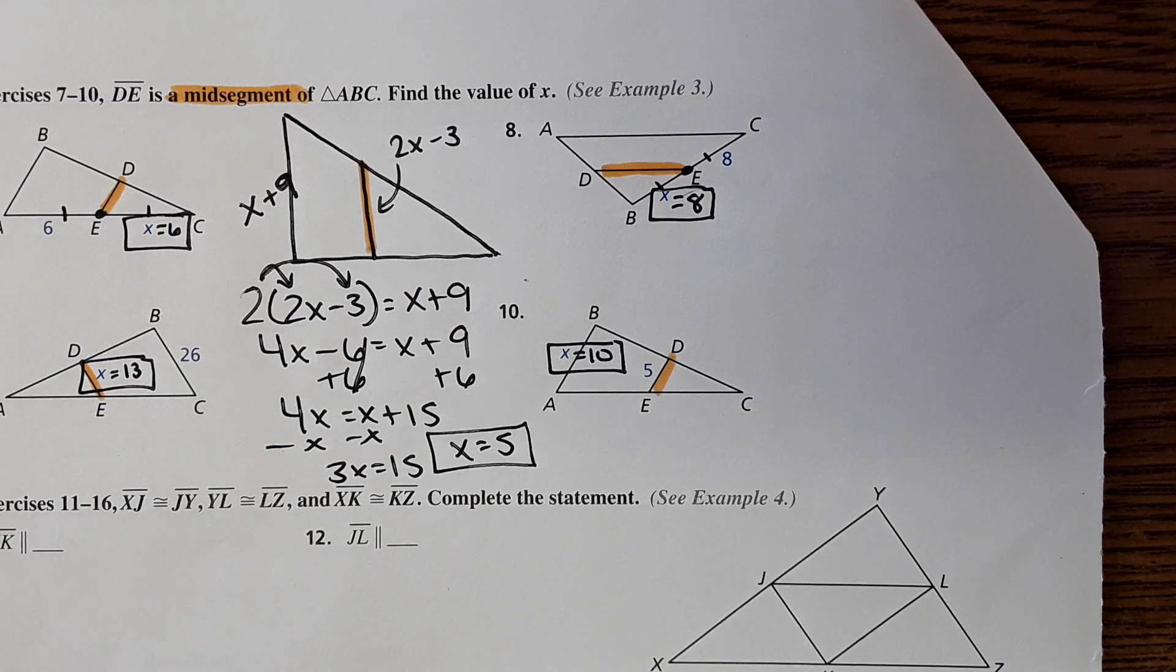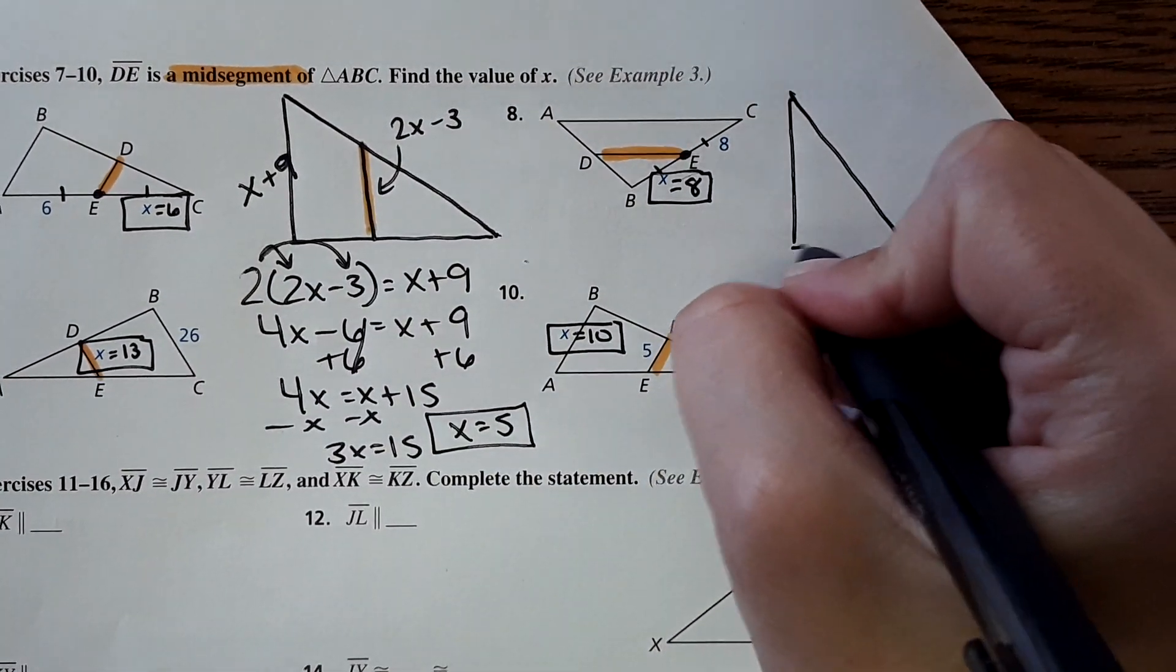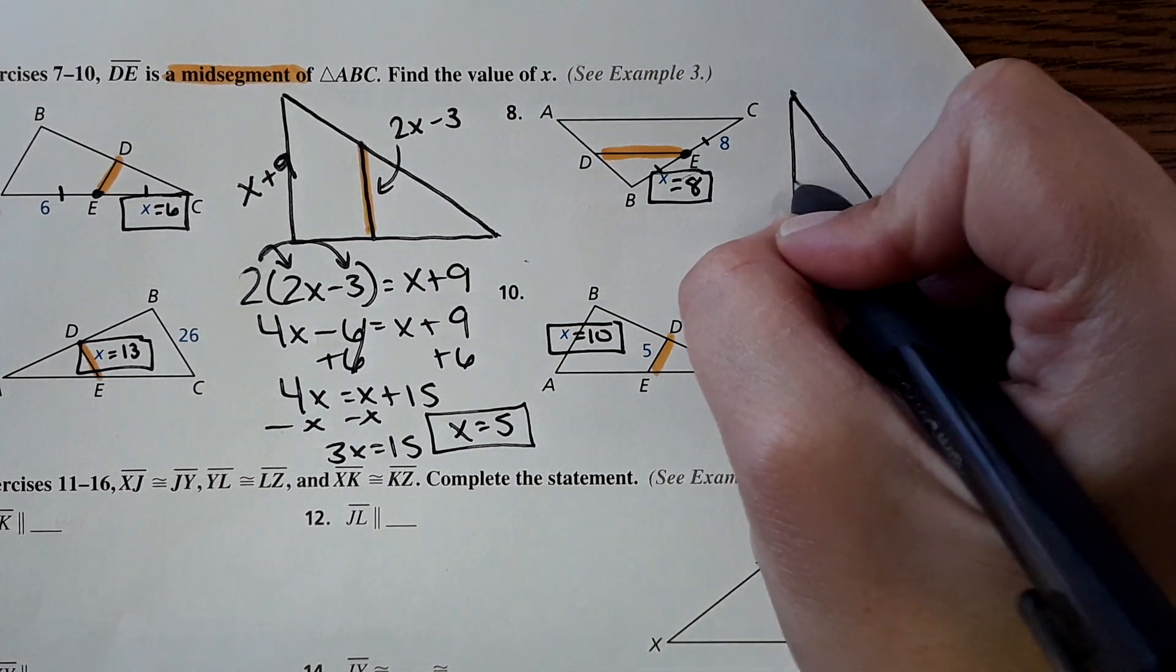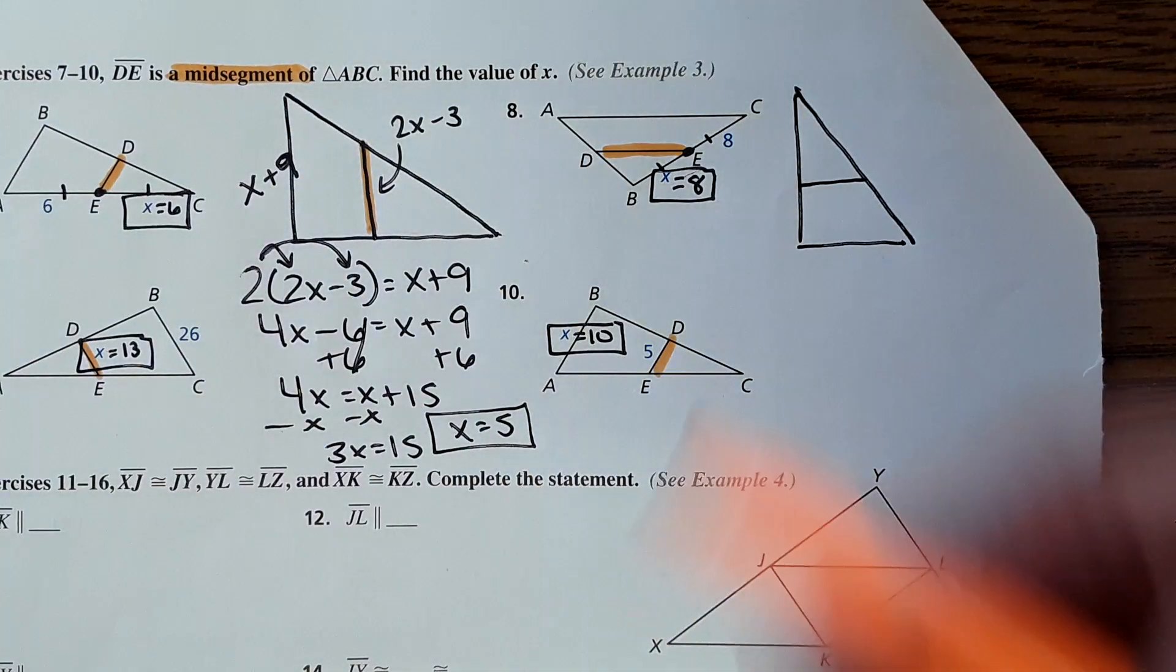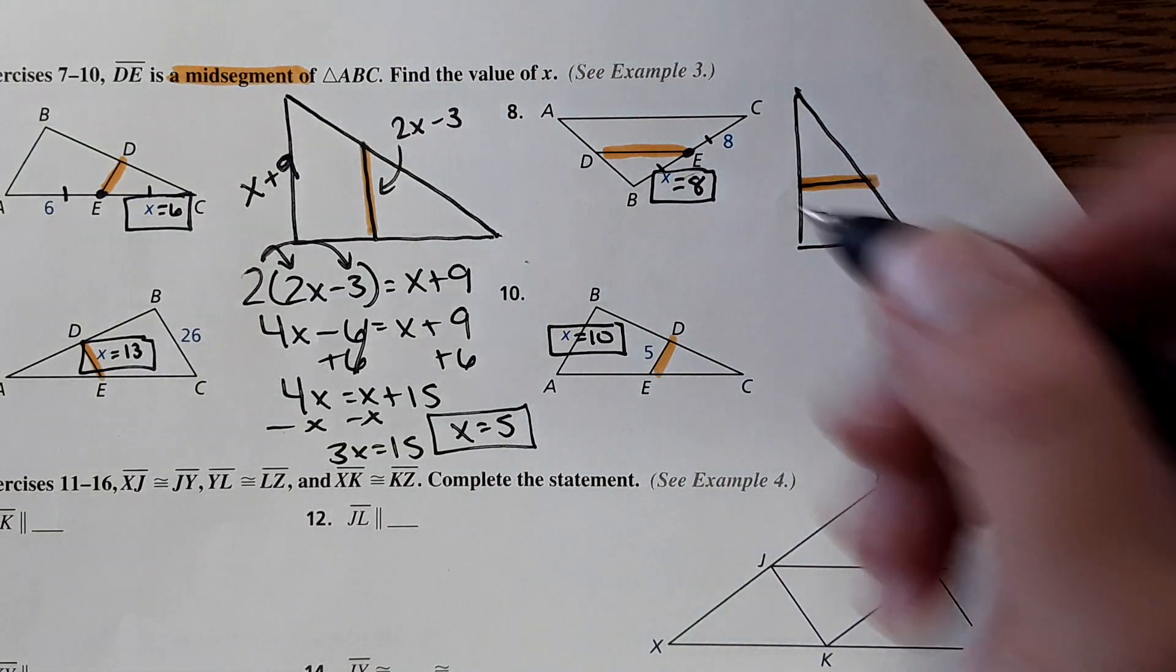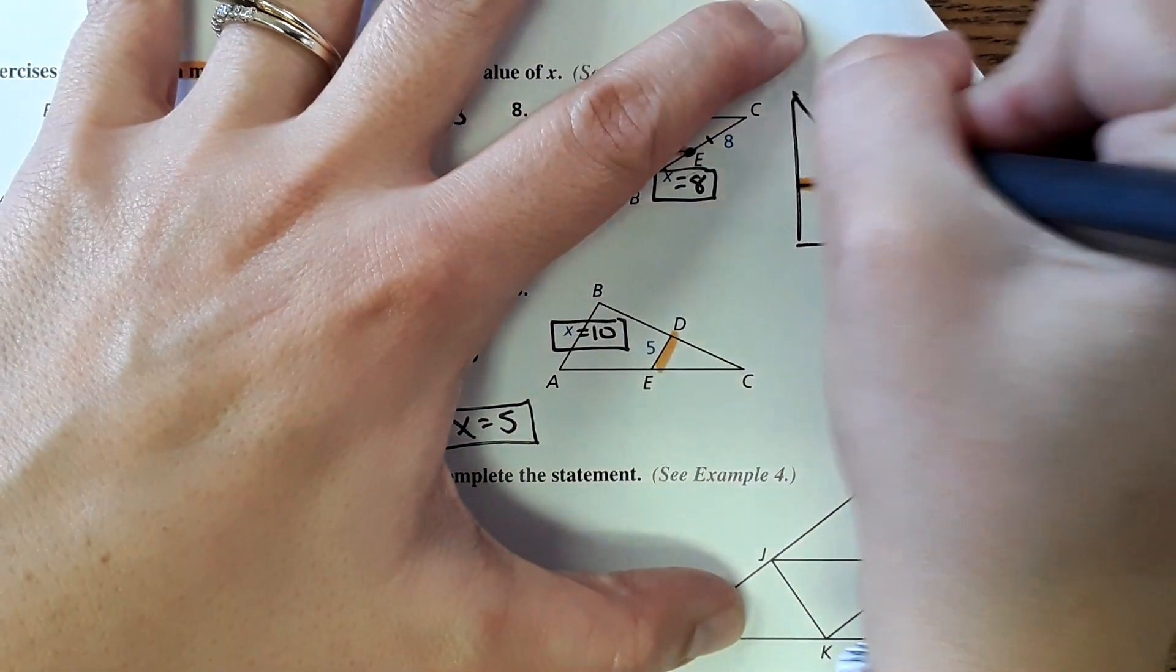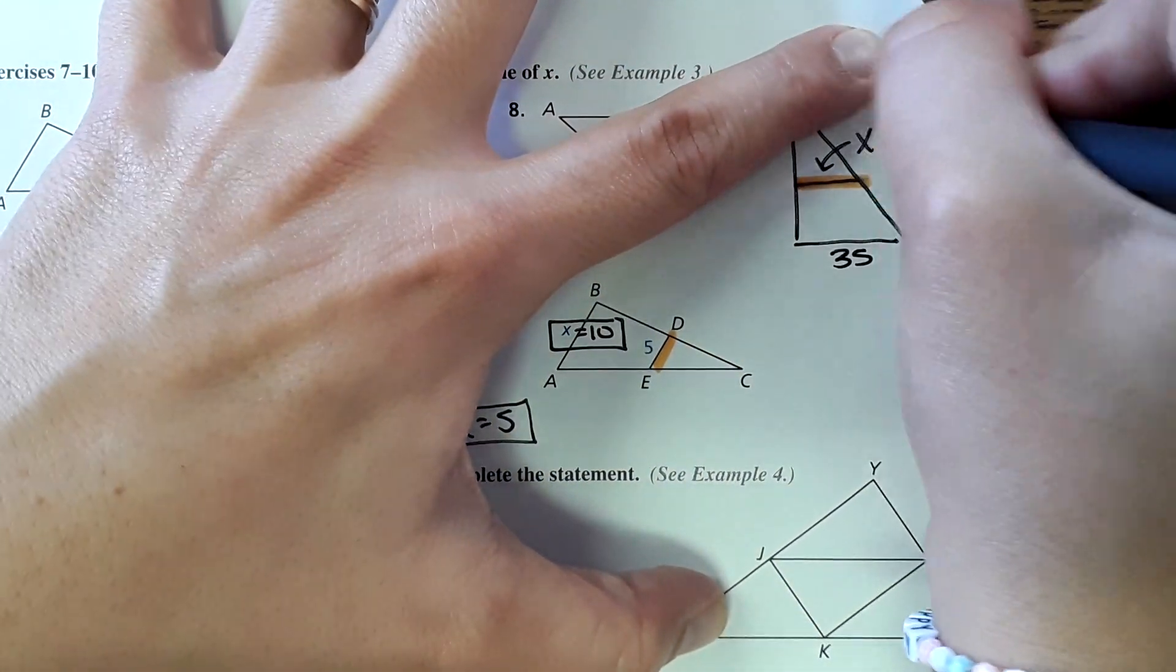And then we'll do one more example like that. Again, these exact examples could be on your homework. So we'll call this the mid segment right here, and we'll say that this is 35 units and then this mid segment is x minus eight.